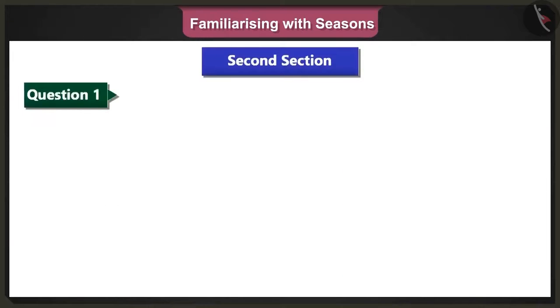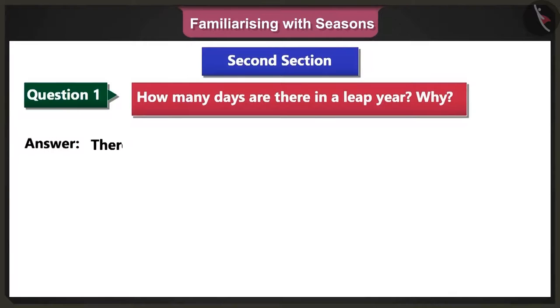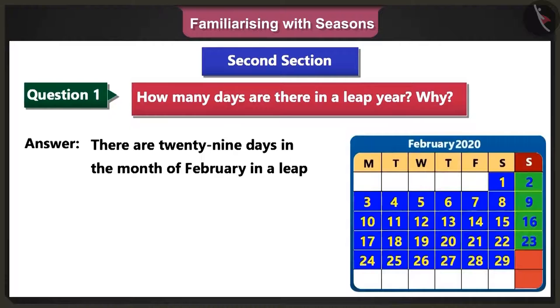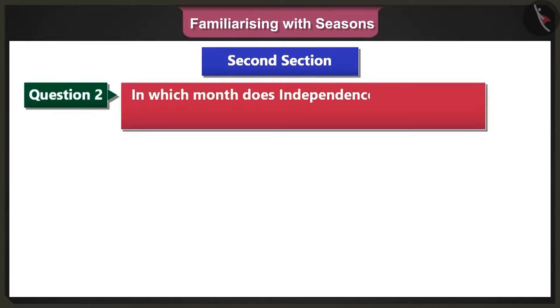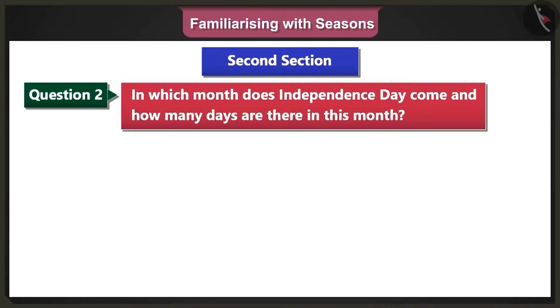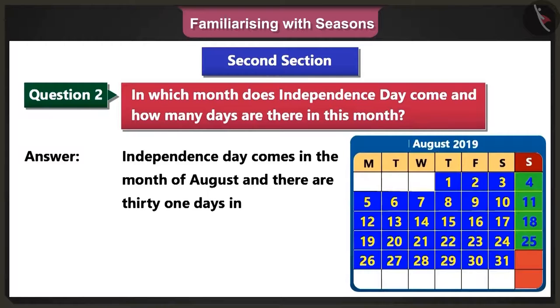First question of the second section: How many days are there in a leap year, and why? There are 29 days in the month of February in a leap year. Hence, there are 366 days in this year. Second question: In which month does Independence Day come and how many days are there in this month? Independence Day comes in the month of August and there are 31 days in this month.